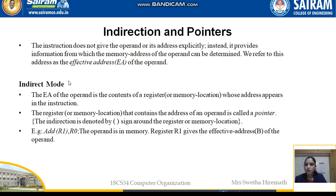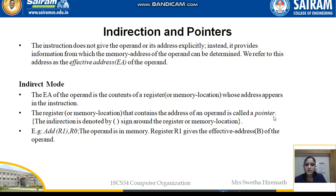The next type is indirect mode. Here the effective address of the operand is the contents of a register or memory location whose address appears in the instruction. That register or memory location does not hold the value itself — it holds the address of where the value is actually stored. The register or memory location containing the address is called a pointer.